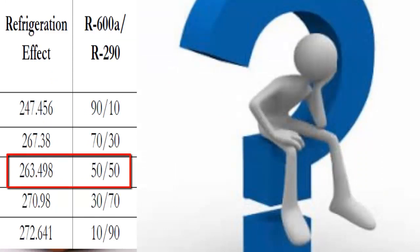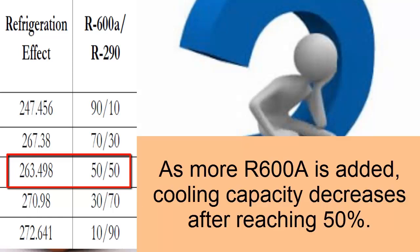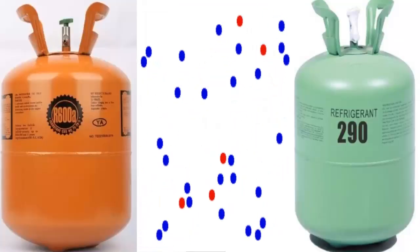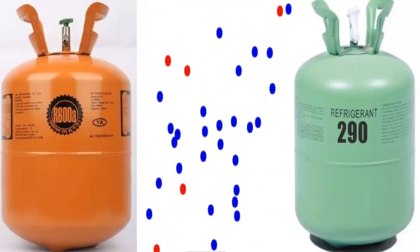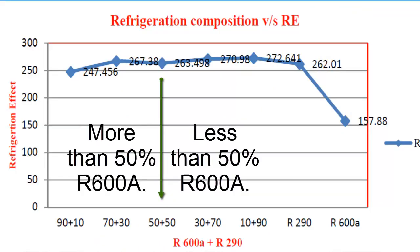As the amount of R600A increases in the mixture, with values well above 50% of R600A, the cooling capacity or refrigeration power of the system starts to decrease. In other words, it takes more time to cool down, or has the ability to cool down fewer products. On the screen we have different cooling power values for some mixtures between R600A and R290.